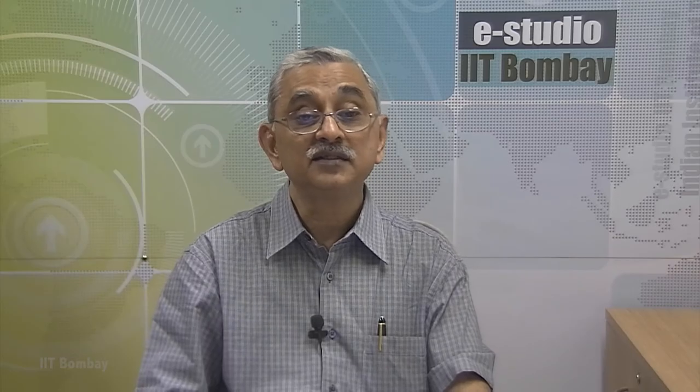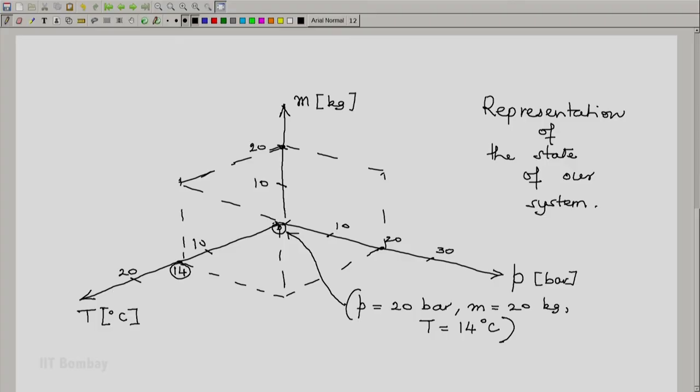Now remember that this is something like, in this particular case, because there are three properties, three dimensional geometry. The pressure is represented on one axis, the mass is represented on another axis, and temperature is represented on the third axis.